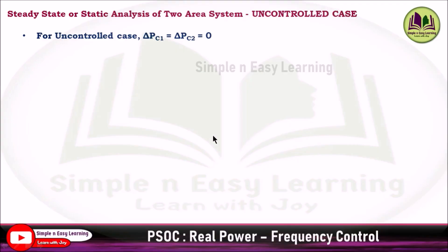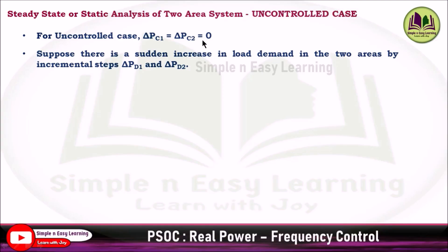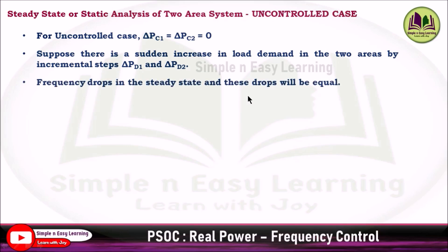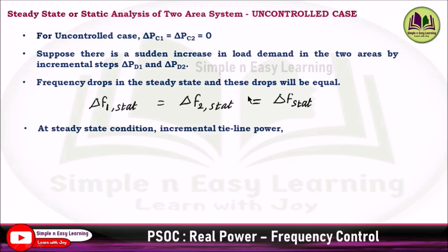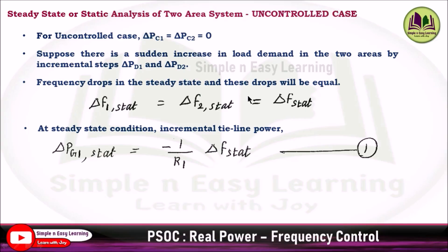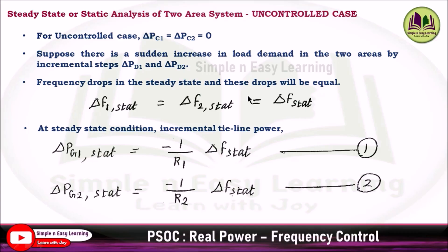For the uncontrolled case, the speed changer input is assumed to be zero, so ΔPc1 = ΔPc2 = 0. Suppose there is a sudden increase in load demand in the two areas by incremental steps ΔPd1 and ΔPd2. The frequency drops in steady state and this drop will be equal: Δf1_stat = Δf2_stat = Δf_stat. This gives equation 1: ΔPg1_stat = −(1/R1)·Δf_stat, and equation 2: ΔPg2_stat = −(1/R2)·Δf_stat, where R1 and R2 are speed regulation constants.